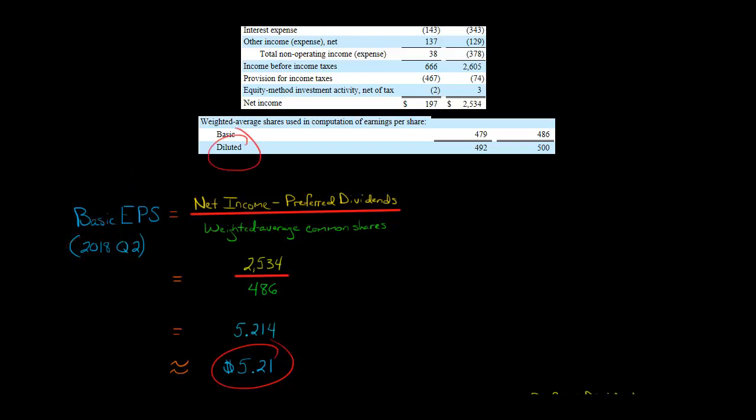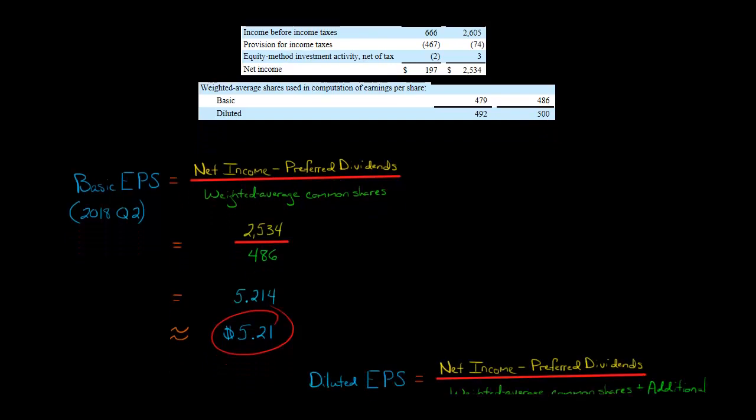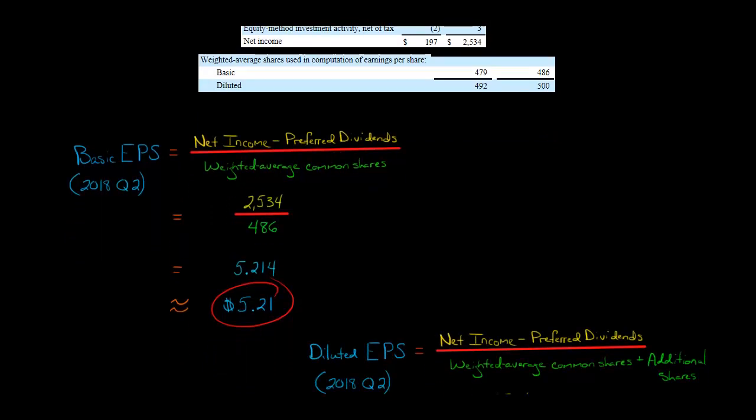Now, with the diluted, you'll notice that the number of shares, the number of weighted average common share, this is actually higher. And the reason is that when we're talking about diluted shares, what we're going to do is we're going to do the same formula to calculate the earnings per share, but we're going to have something added to the denominator. This bottom part, we have some additional shares. In this case, it's because we're using something called the Treasury Stock Method.